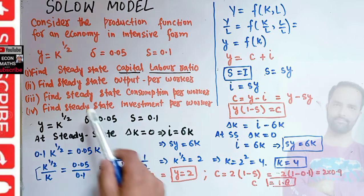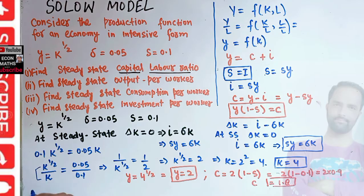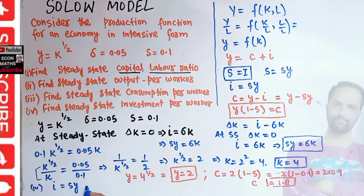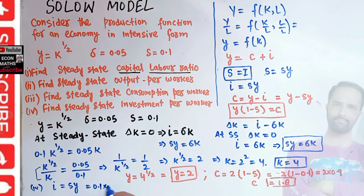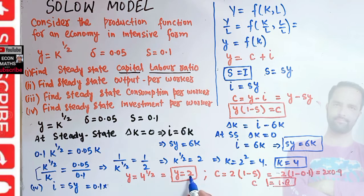The last part is to find the investment per worker. We know i equals s times y. Savings rate s is 0.1 and output per worker y is 2, so investment per worker equals 0.1 times 2, which equals 0.2. Our steady state investment per worker is 0.2.